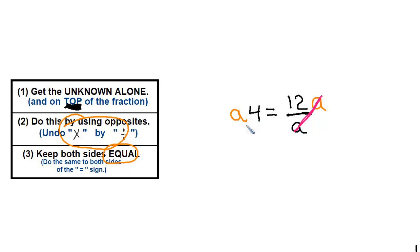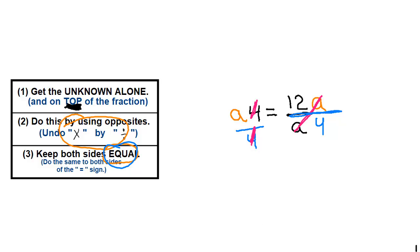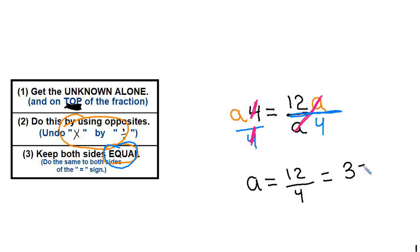We're not done yet, because A is not alone — now A is next to 4, so we're multiplying by 4. What's the opposite of multiplied by 4? We need to divide by 4. We're multiplying and dividing by 4, so these will reduce. Remember, keep both sides equal: if you're going to divide this side by 4, you also divide this side by 4. Then the 4s reduce. Rewriting: A equals 12 divided by 4. Plugging into the calculator — 12 divided by 4 — and we end up with 3. A equals 3.